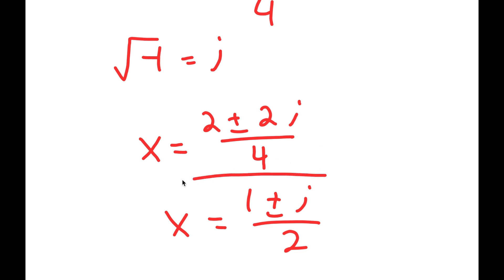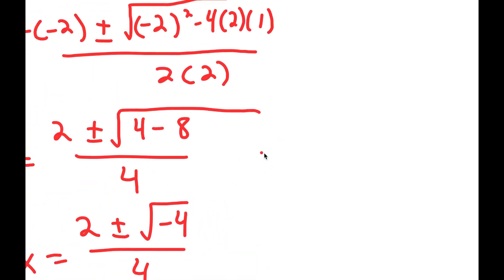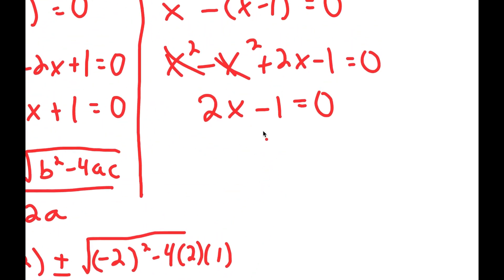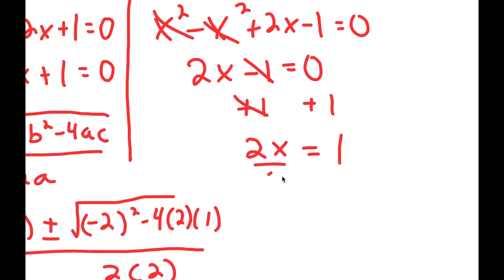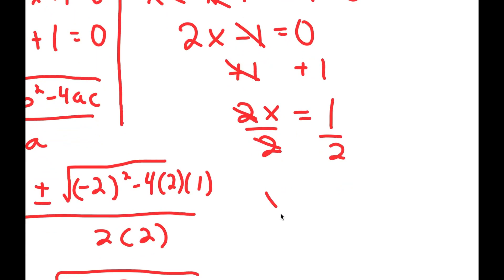Those are two solutions from the quadratic. Now for the second equation, 2x minus 1 equals 0. To solve this, I add 1 to both sides to get 2x equals 1, then divide both sides by 2 to get x equals 1 half.